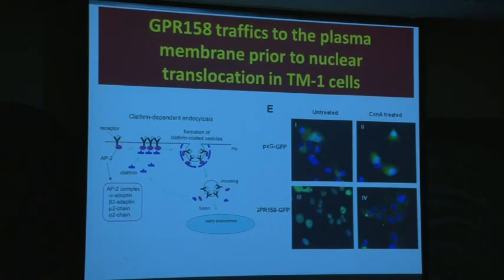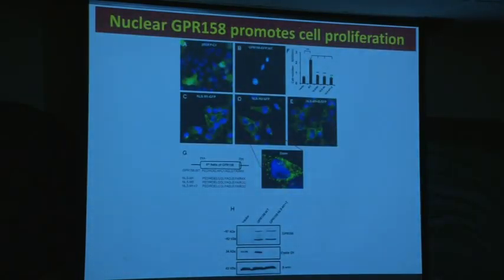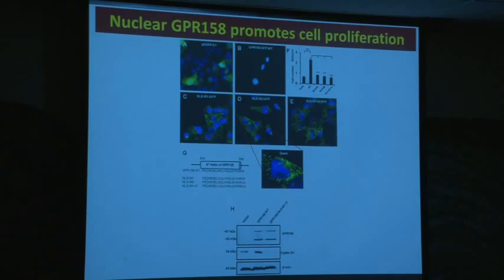If we treat the cells with inhibitors of clathrin-mediated endocytosis, the protein goes from being in the nucleus to being on the plasma membrane. So it does behave, even in the trabecular meshwork cells, like a normal G protein coupled receptor. We then made mutations in the nuclear localization signal, and in all three cases, we found there was no longer any nuclear translocation.